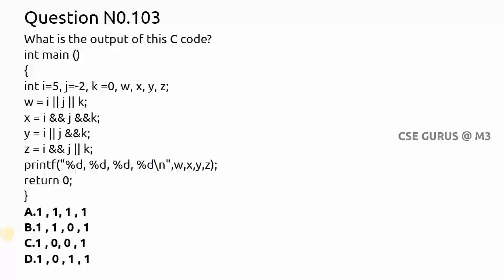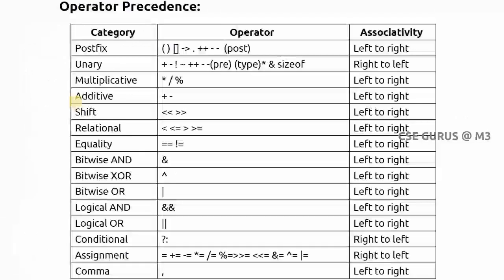Coming to question number 103, which is about logical operators — double ampersand (&&) and double pipe (||). We need to find w, x, y, and z values given i=5, j=-2, k=0. Remember operator precedence: if you have more than one logical AND, associativity is left to right; same for logical OR. But if you have one logical AND and one logical OR together, logical AND always has higher priority.